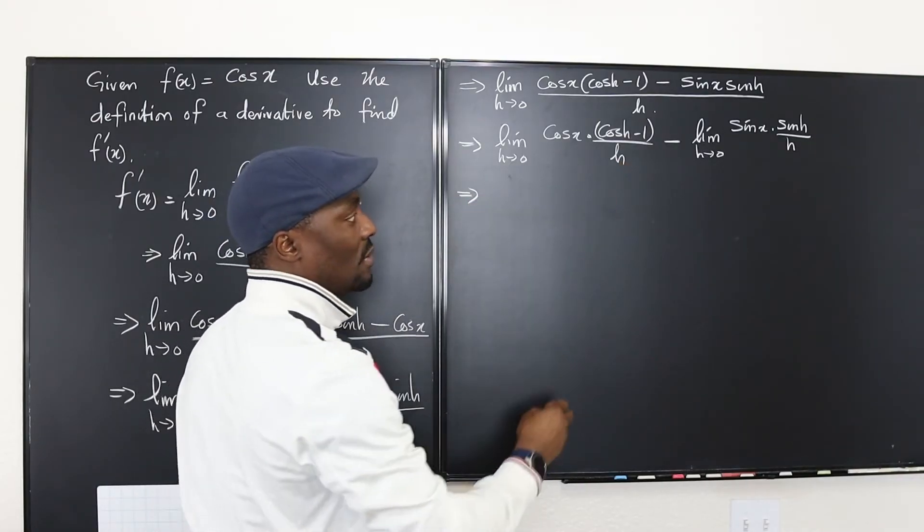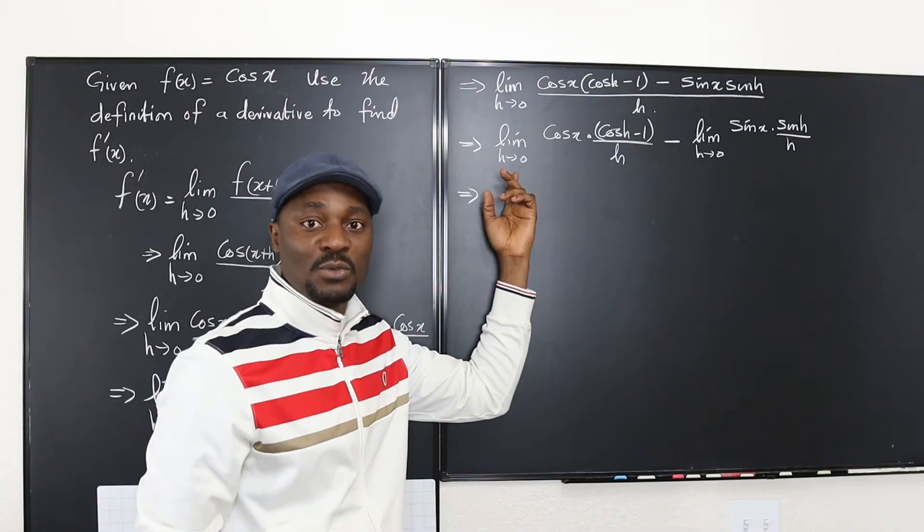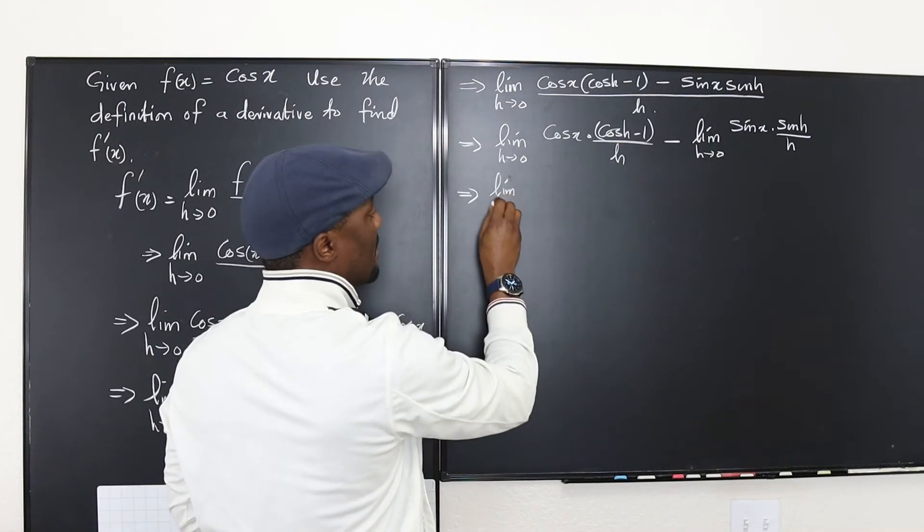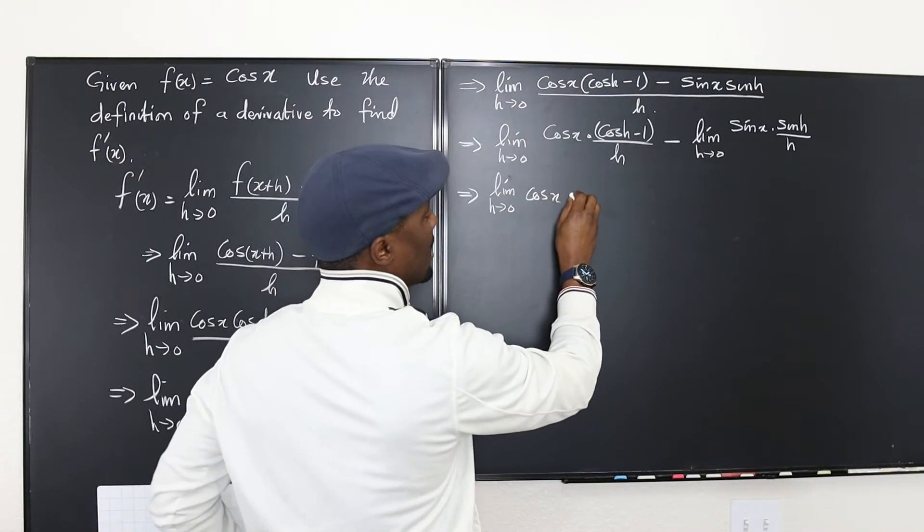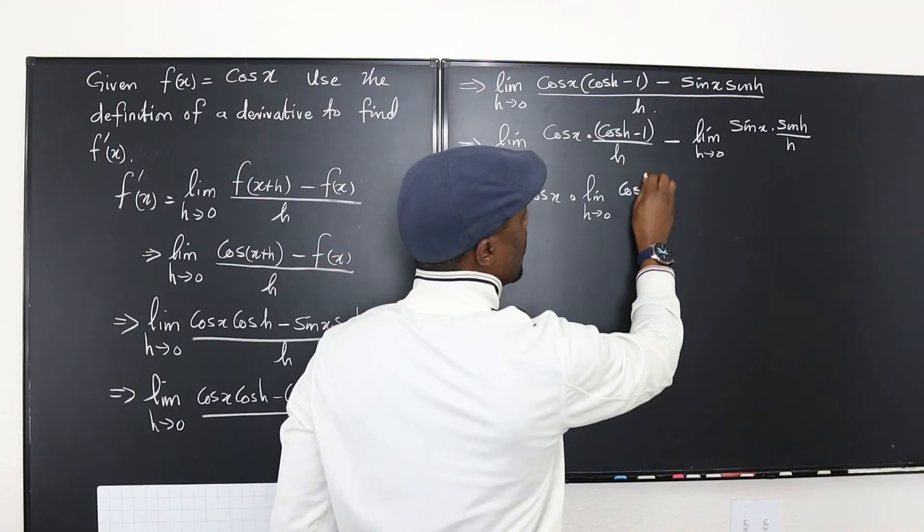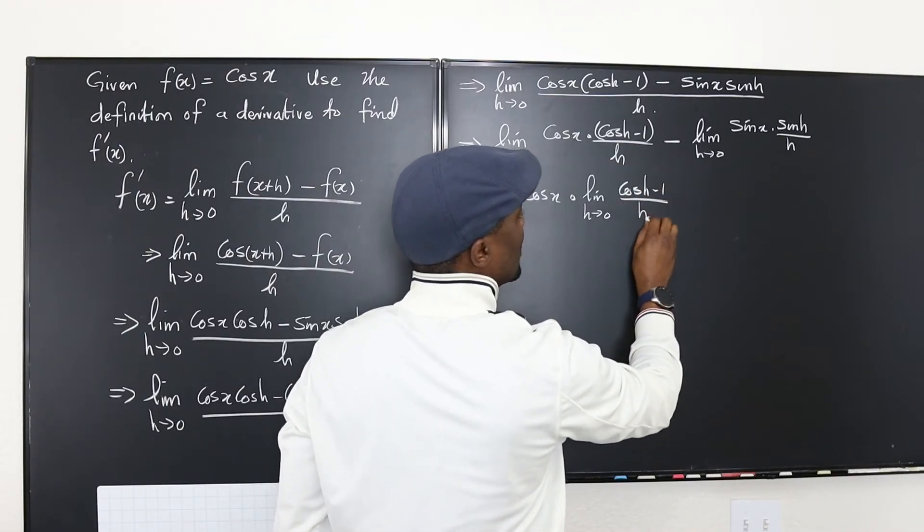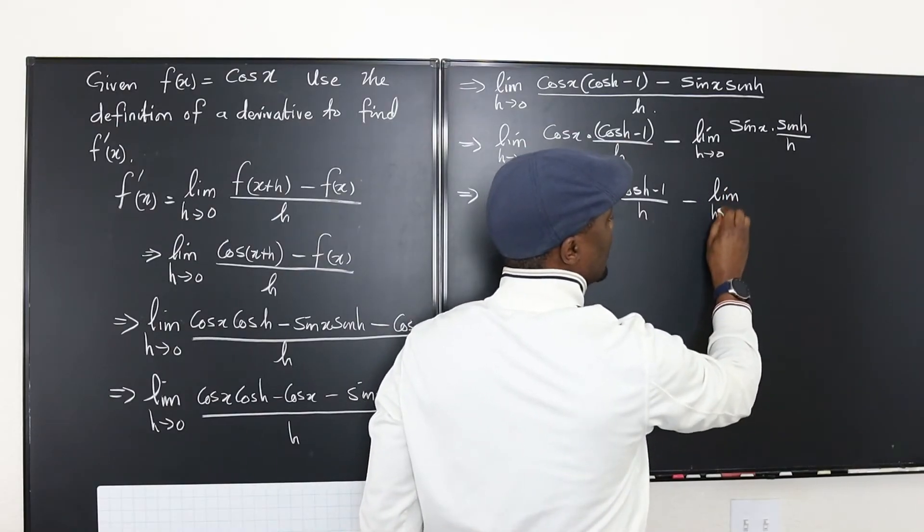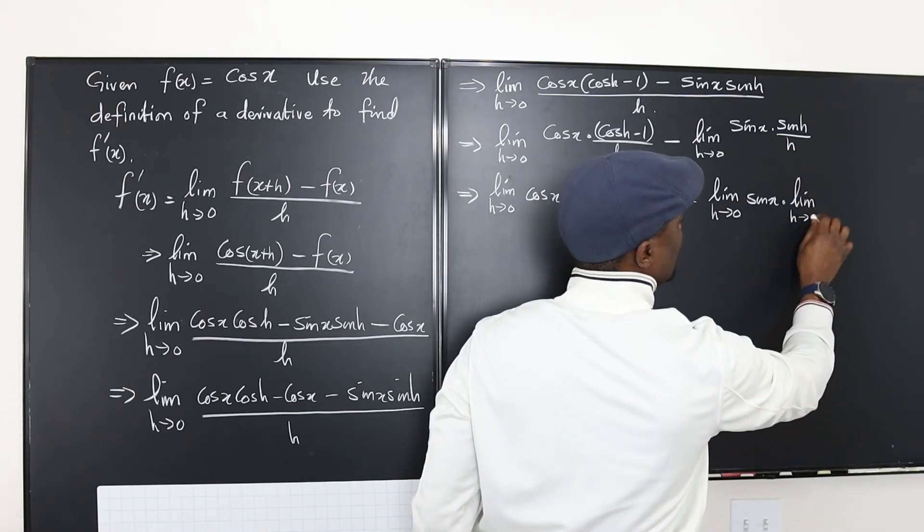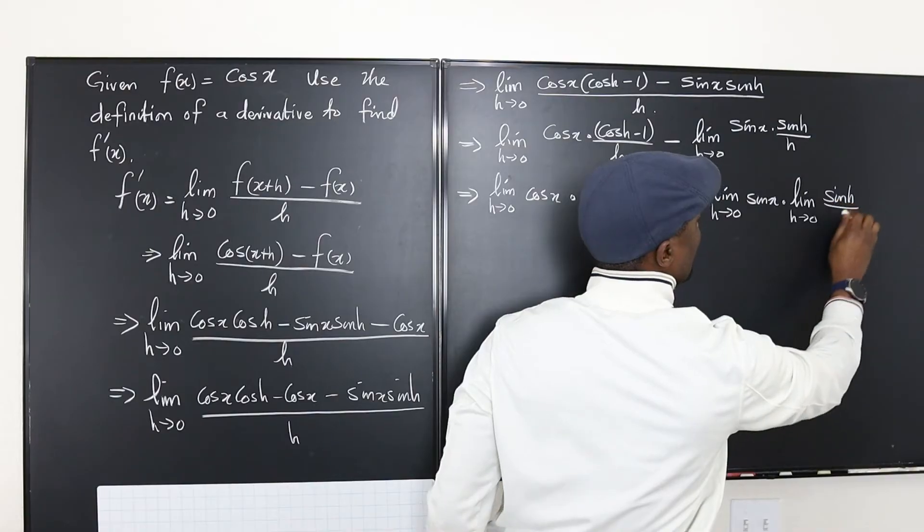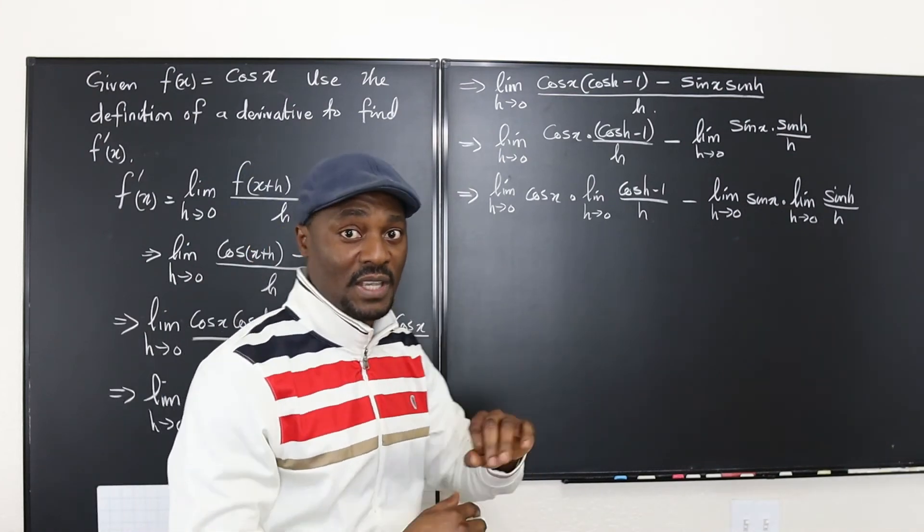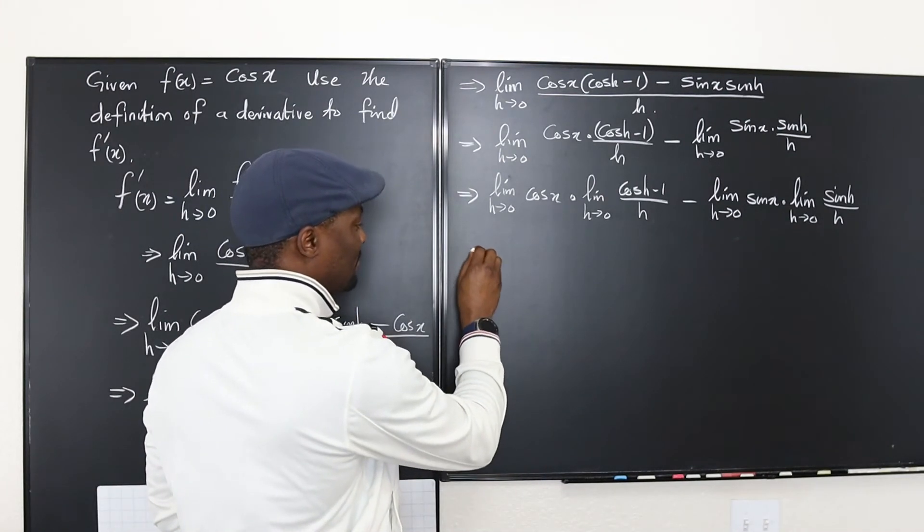So what we have right here I can apply the product rule, not product rule, the product of a limit rule. Okay one of the laws which says that you can distribute the limit so you have the limit as h goes to zero of cosine x multiplied by the limit as h goes to zero of cosine h minus one over h minus you do the same thing here. So here the limit as h goes to zero of cosine x multiplied by the limit as h goes to zero of sine h over h. So what you observe is that we've taken the limit of every single part of this expression.